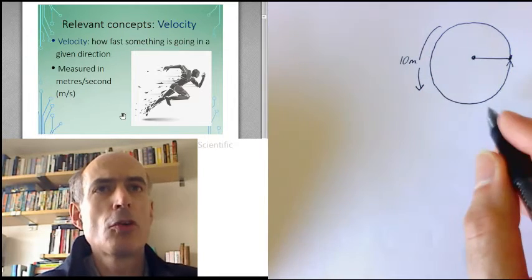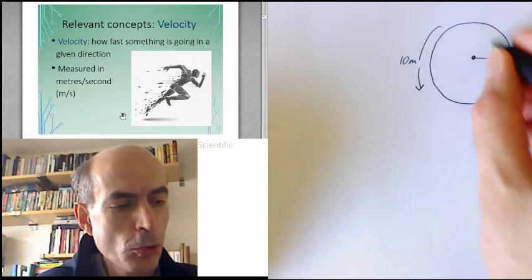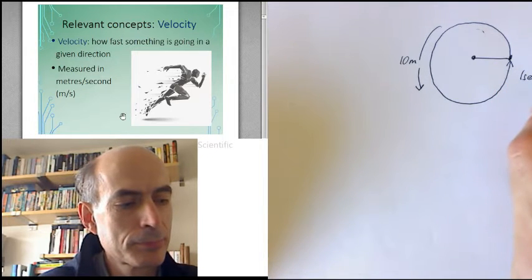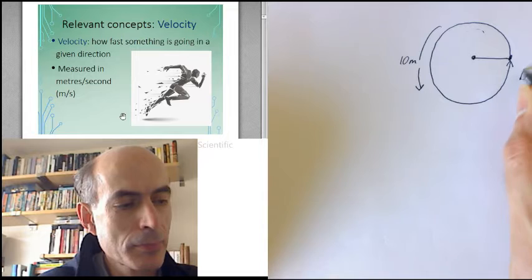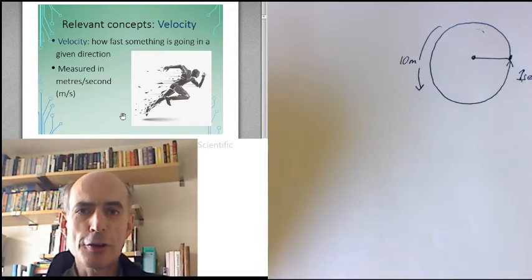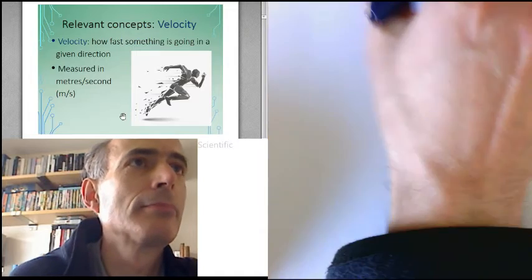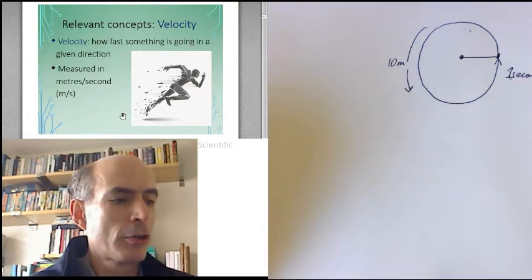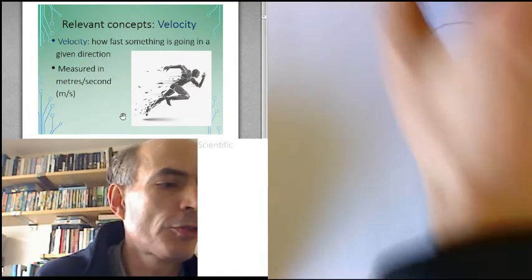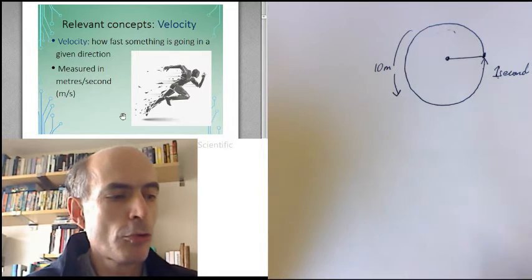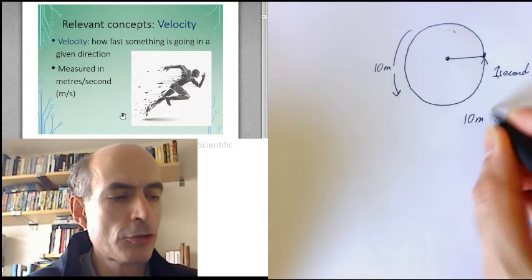The circle has a circumference of maybe 10 meters. And it takes one second to go all the way around that circle. How fast is it going? Well, in terms of speed, it has gone 10 meters in one second. Therefore, the speed would be 10 meters per second.